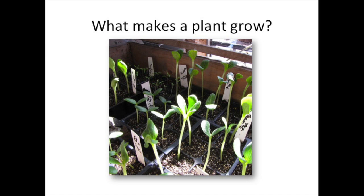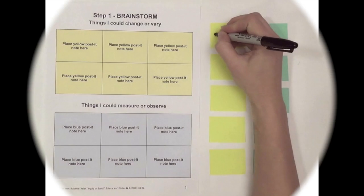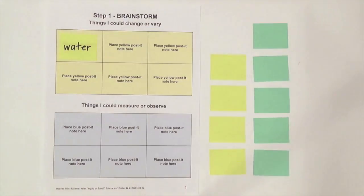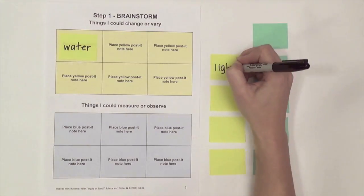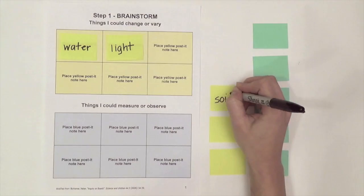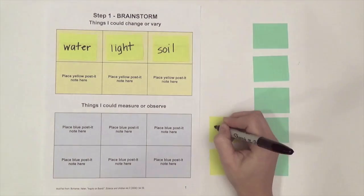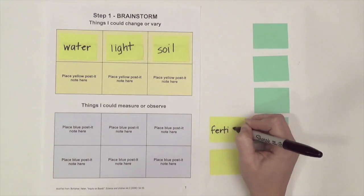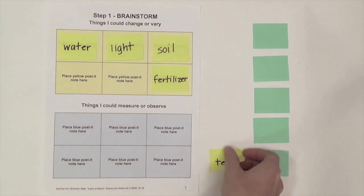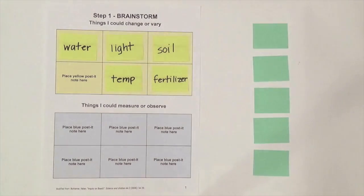Let's look at an example of inquiry boards in action. Suppose we want to do an experiment to investigate what makes a plant grow. We can brainstorm ideas using the first inquiry board. We'll start by writing down things that we could change that might affect plant growth, like the amount of water, the amount of light, the type of soil we use, whether we give the plants fertilizer, and temperature.